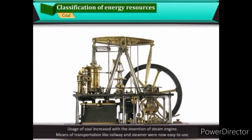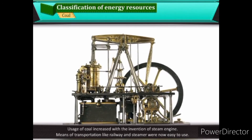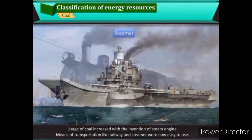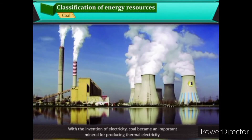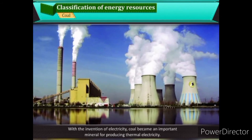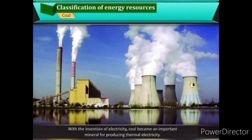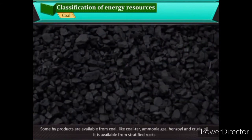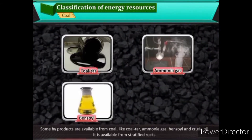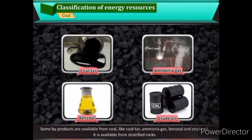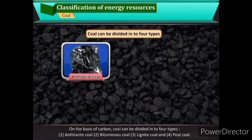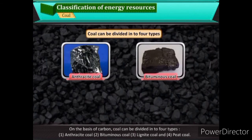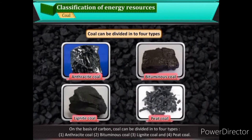The usage of coal increased with the invention of the steam engine, making transportation like railways and steamers easier. With the invention of electricity, coal became an important mineral for producing thermal electricity. Some by-products available from coal include coal tar, ammonia gas, benzoyl, and crude oil. Coal is available from stratified rocks and can be divided into four types based on carbon content: anthracite, bituminous, lignite, and peat coal.